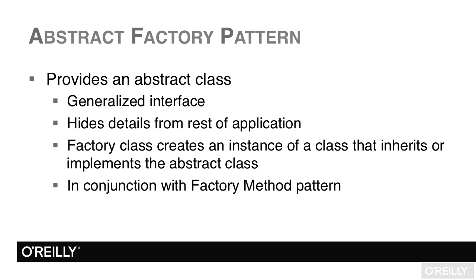The factory class will create an instance of a class that inherits or implements an abstract class. The classic form is to have an abstract class, but you can also use a factory that implements an interface. We're going to demonstrate using an abstract class, and later on we'll also show how to use interfaces. Another cool thing is we can use the abstract factory in conjunction with the factory method pattern, and also with the builder pattern. A number of these patterns can go together as well as stand alone.